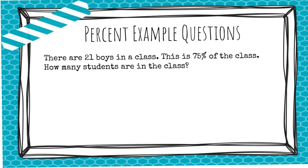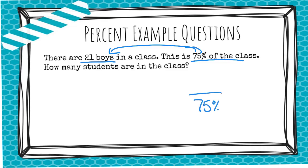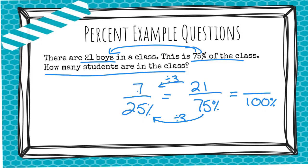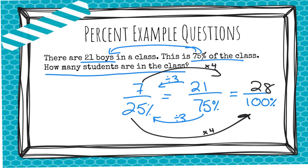Let's take another look at a percent problem — I highly recommend you pay attention to this one. There are 21 boys in the class, and this represents 75 percent of the class. We want to find how many students are in the class total, so we're finding the 100 percent. This isn't a straight shot, so we're going to go down to 25 percent first. Counting by 25s, 75 divided by 3 gets us to 25 percent, so 21 divided by 3 gives 7. Now we can jump from 25 to 100 percent, which is times 4, so 7 times 4 is 28. There are 28 students in the class.